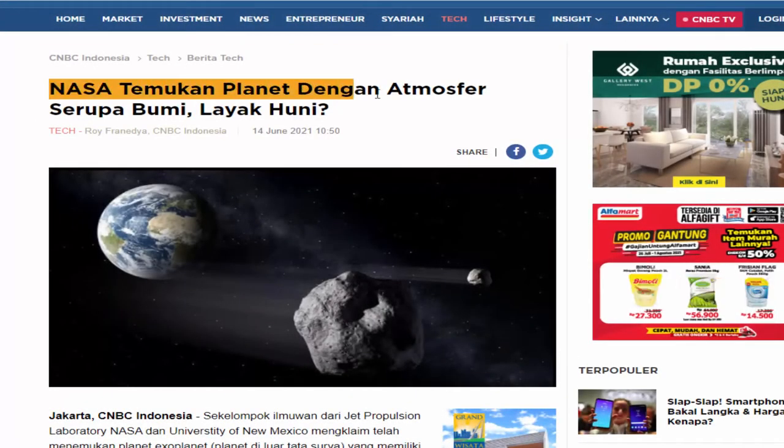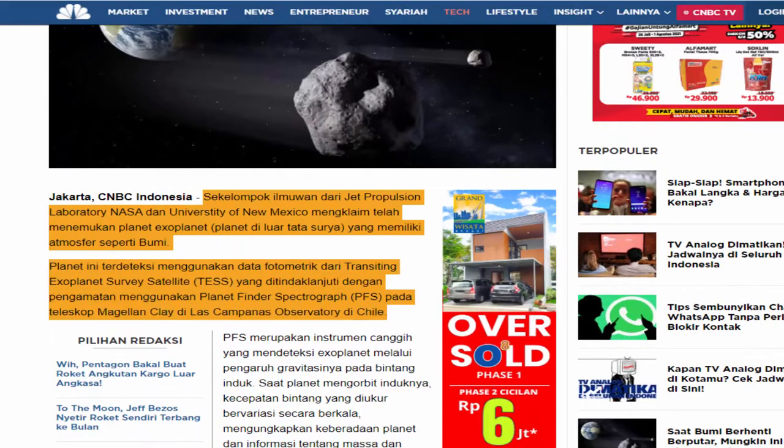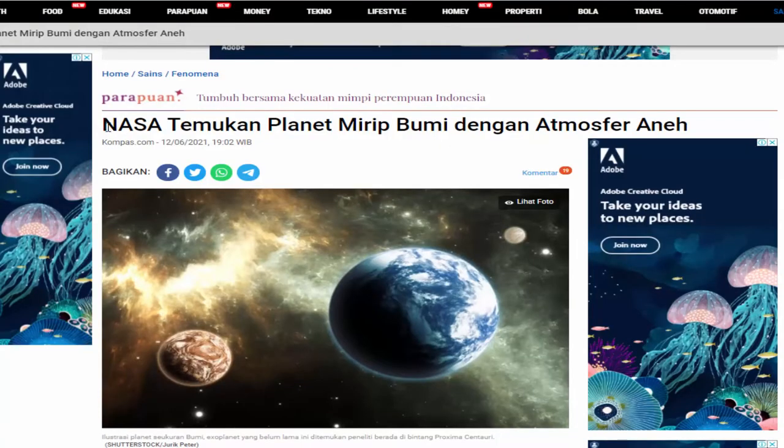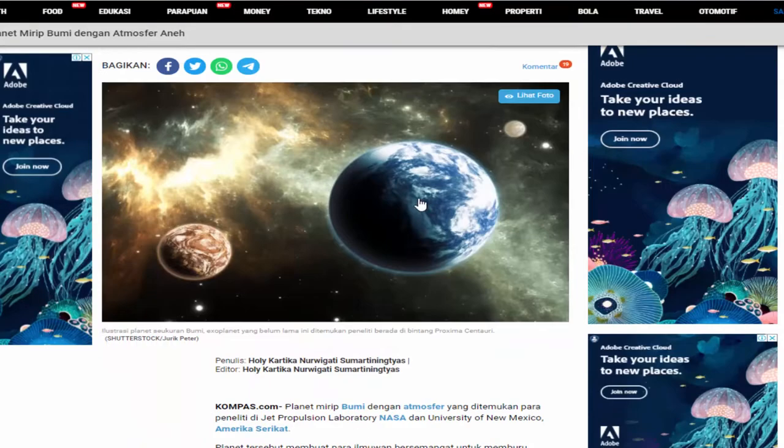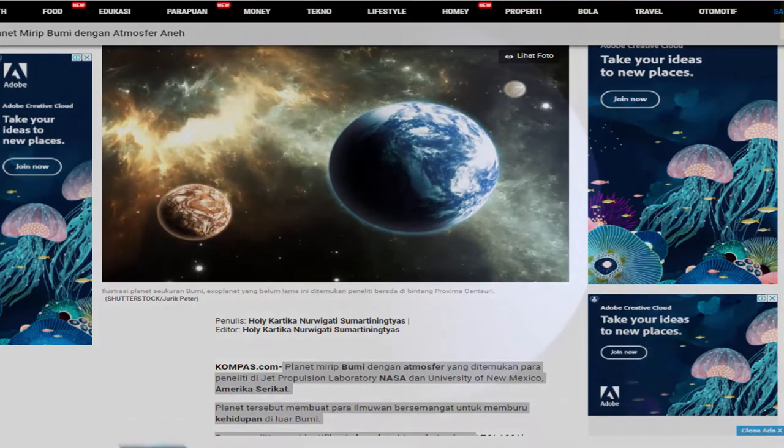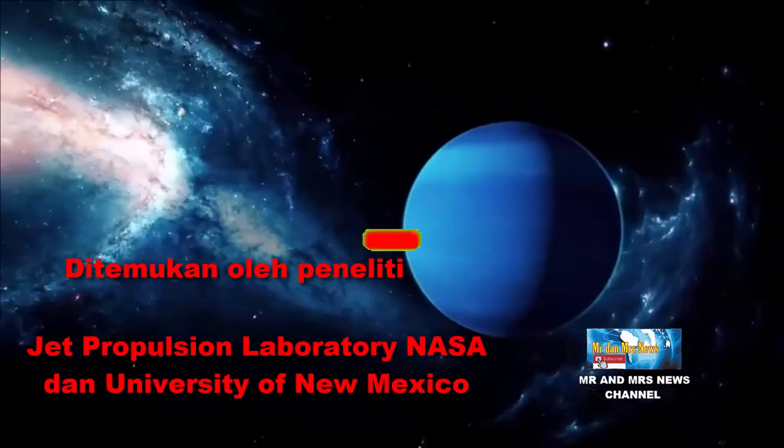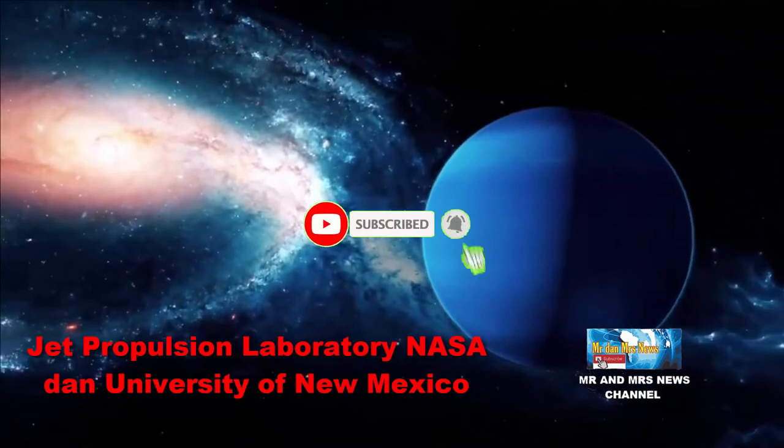Para ilmuwan NASA menemukan planet aneh baru-baru ini yang disebut TOI-1231B karena memiliki atmosfer sangat mirip dengan bumi. Planet ekstrasurya yang mengorbit bintang KTM merah itu ditemukan oleh para peneliti dari Jet Propulsion Laboratory NASA dan University of New Mexico.